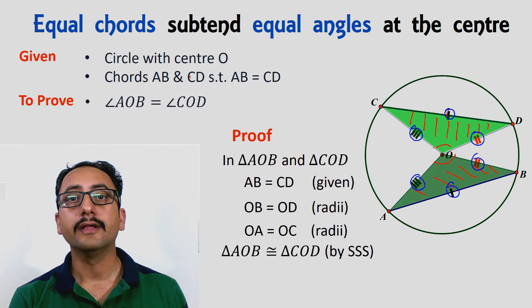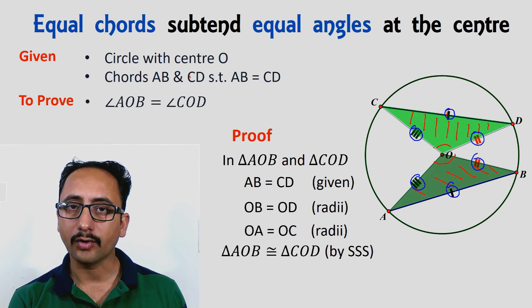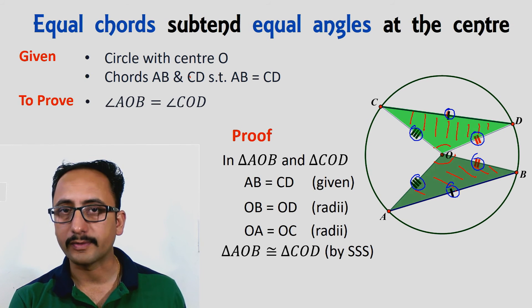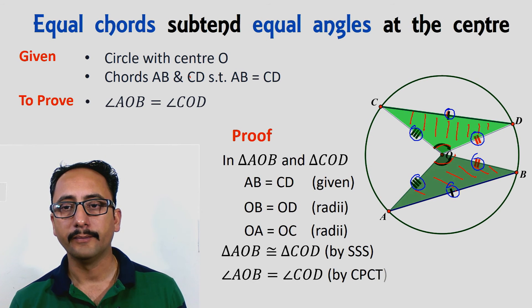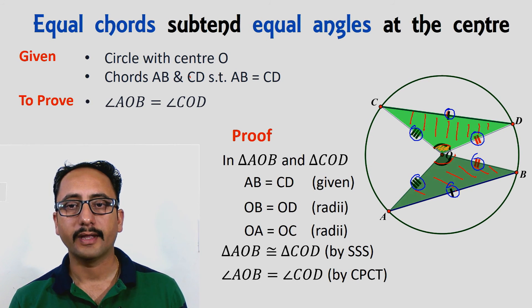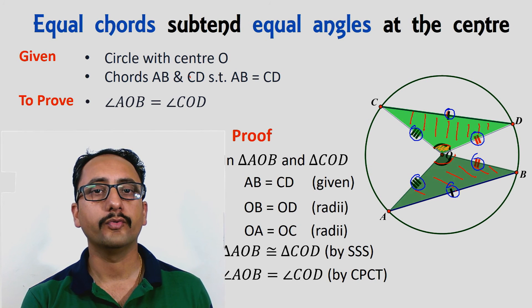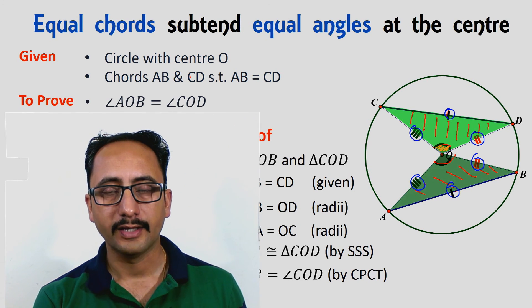If these triangles are congruent by side-side-side congruency rule, then the corresponding sides of these triangles have to be equal, and these angles will be equal, and hence the proof of the theorem.